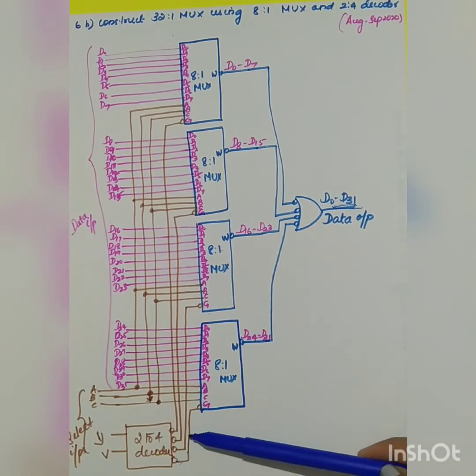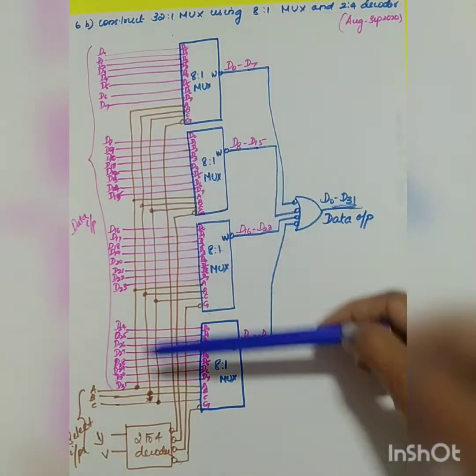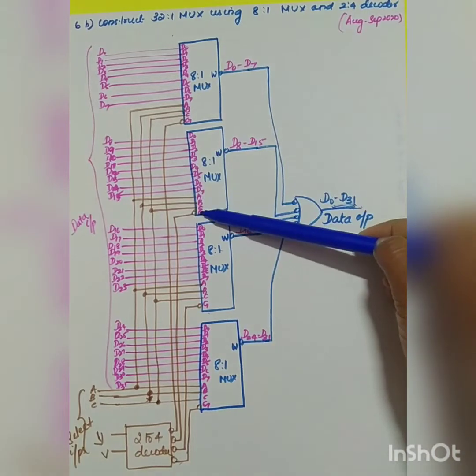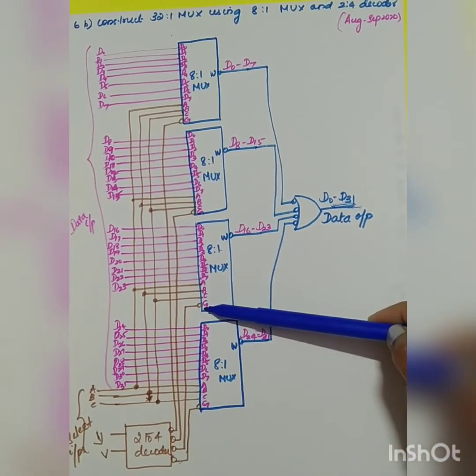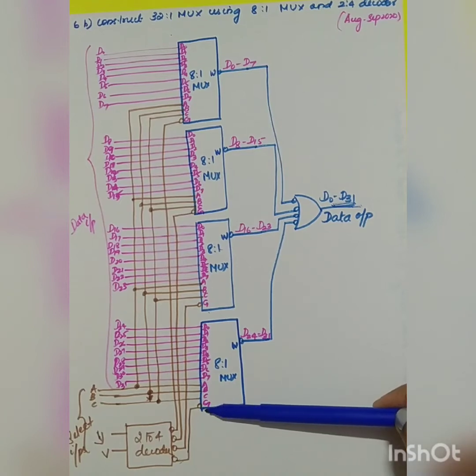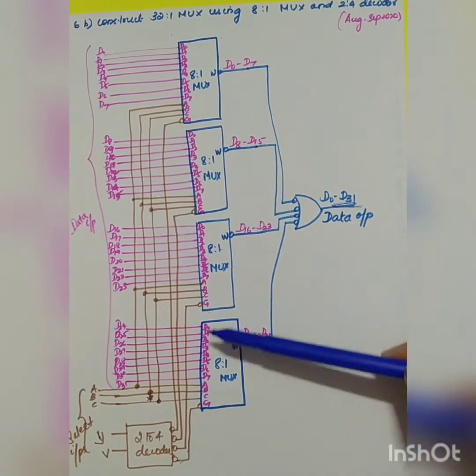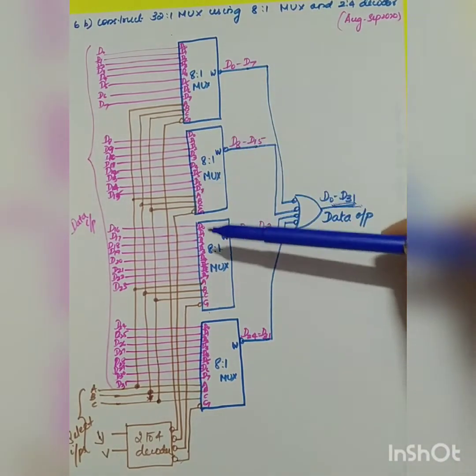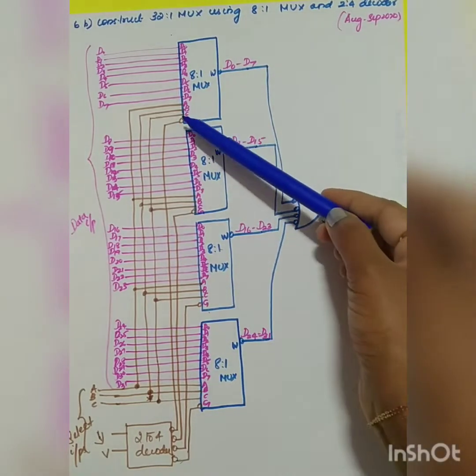The first output will be given to your first MUX, second output to your second MUX, third output to your third MUX, and fourth output to your fourth MUX. This is called the enable. At any one time, any one of the MUXes will be enabled depending on the output of the decoder.